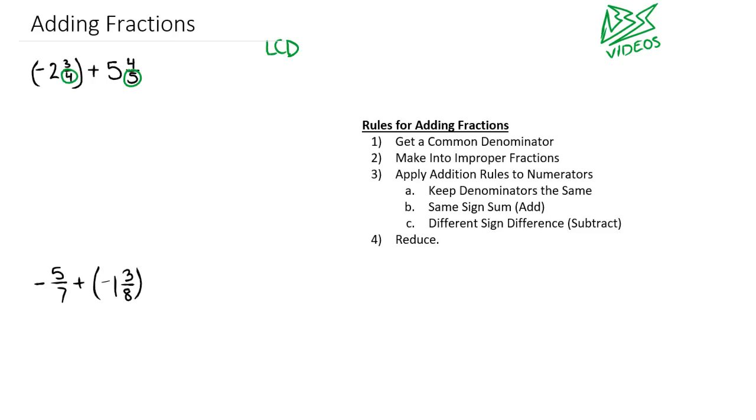One strategy you can use is just multiply 4 by 5 to get 20. Let's not worry about the whole number out front right now, but to get 4 to 20, we multiply by 5. So we multiply the numerator by 5 and get 15.